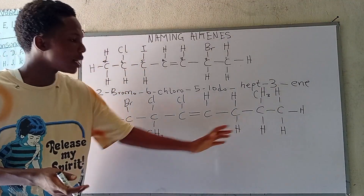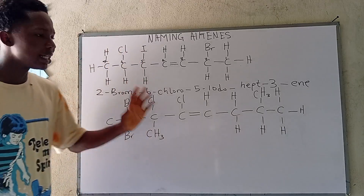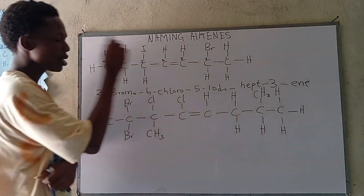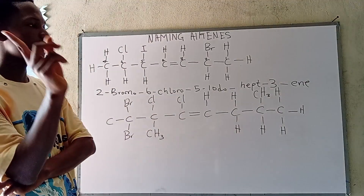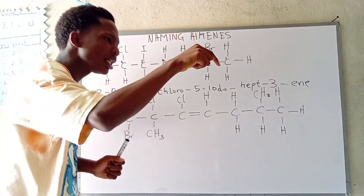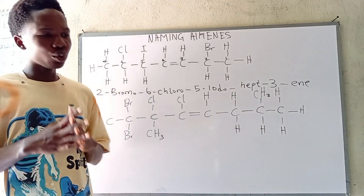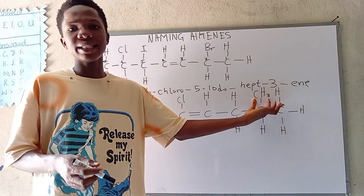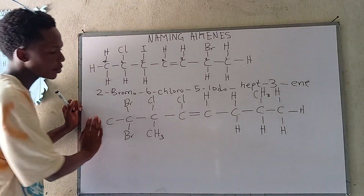Now looking at the next compound — how are we going to name this? It is a little bit different. We have to take careful steps and observe the double bond. From the look of things, coming from either side gives us four carbons, so we can start from anywhere. This is the different category I told you about. We first put the inorganic substituent into consideration before the organic substituent, which is methyl.